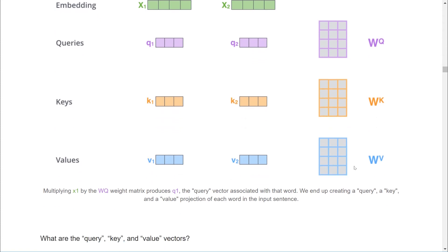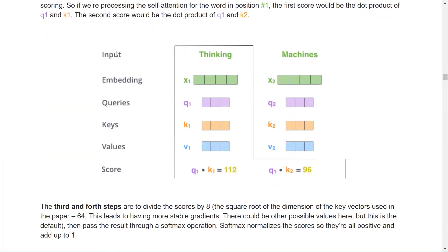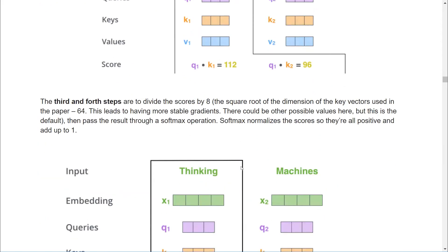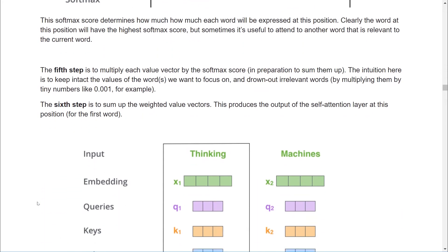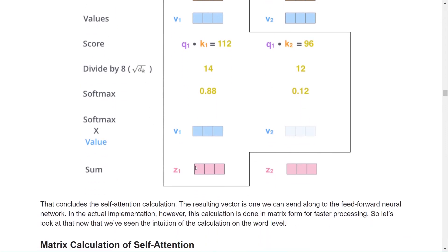The second step of calculating self-attention is to calculate a score. Starting with the first word, thinking, we need to score each word of the input sentence against this word. The score then determines how much focus to place on other parts of the input sentence as we encode a word at a certain position. To calculate the score, we simply take the dot product of Q1 and K1, then Q1 and K2, and this process repeats for every input word. Step three is to divide the score by the square root of the dimensionality of the key vector. In our case, the key vector has a size of 64, and the square root of that is 8. Step four is to apply the softmax function to the result. We get a vector of probabilities that add up to 1, the same length as the input. Step five is to multiply each value vector by the softmax score. Step six is to sum up all the weighted value vectors from the previous step. This gives us the final output for the self-attention layer, which we'll call Z.